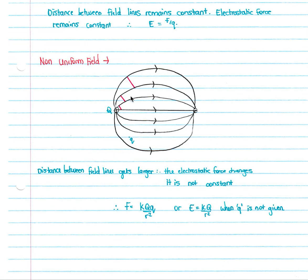In a non-uniform field, we have a positive charge here and a negative charge here. Our field lines go from positive to negative because a positive charge would move that way. Closer to the positive charge, we have field lines that are closer together, and they get further apart as we move away. So the distance between our field lines gets larger and the electrostatic force changes — it is not constant. Your electrostatic force would be greater where field lines are closer together and weaker where they are further apart. Therefore we use F equals KQ1Q2 over R squared, or E equals KQ over R squared when the second charge Q is not given.